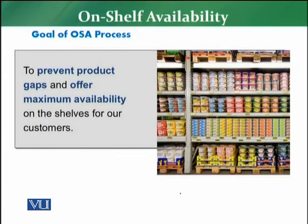So what are the goals of the on-shelf availability process? The key goal is that whatever the customer has planned on their list must be available on the shelf. The two main goals of OSA are: first, to prevent product gaps and shelf availability gaps; and second, to ensure maximum availability of products on the shelf.